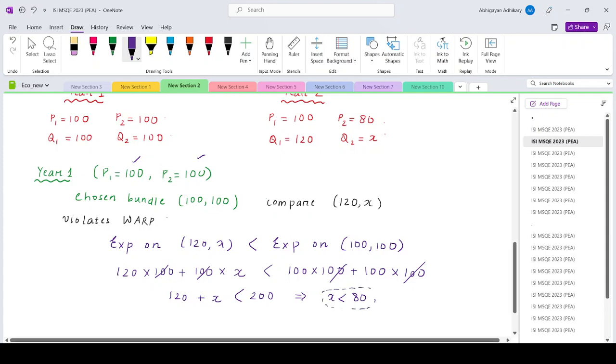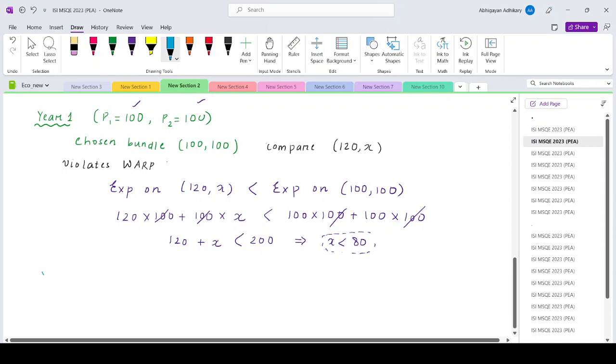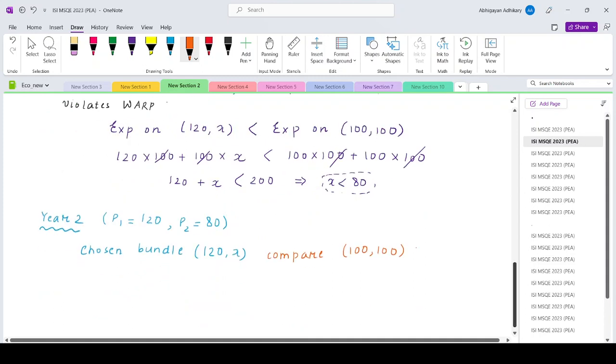This is the first part. Now in exact similar way, if we come to year 2. Year 2, the prices of the two goods are 100 and p2 is 80. What's the chosen bundle? It is 120, x and we have to compare this bundle with 100, 100. So we are trying to find a range of x such that it violates the weak axiom of revealed preference. Now in the exact similar way that we did for year 1, in this case, the weak axiom of revealed preference would be violated if the expenditure on the bundle 100, 100 is actually lesser than the expenditure on bundle 120, x.